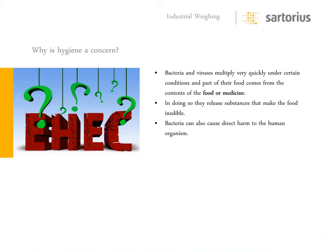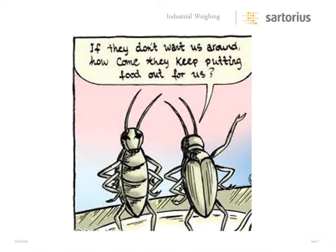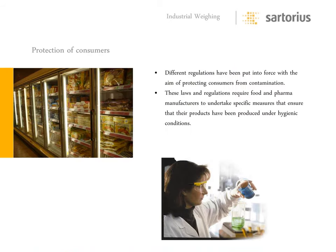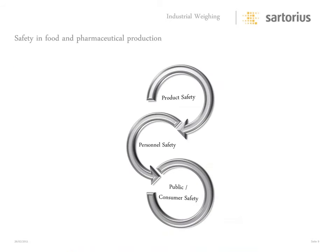Bacteria can release substances that make food inedible and spoil or derail a pharmaceutical production process. There are always places in production where bacteria and microbes can gather. Because of this, various worldwide government agencies have put into place sets of laws, and various organizations have created guidelines that work together globally to reduce the effects of bacterial and microbial contamination. Today we'll take a brief look at what these are and how they affect us.